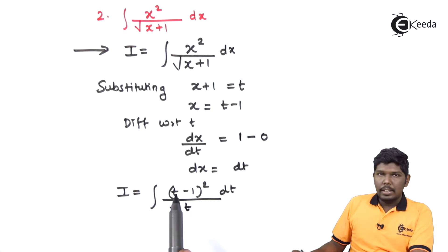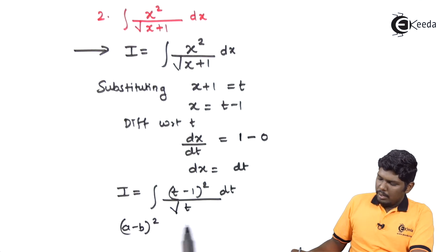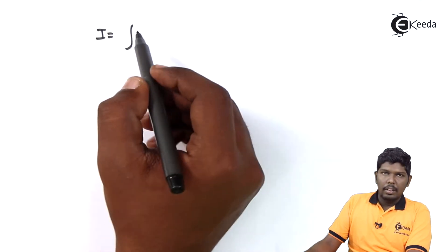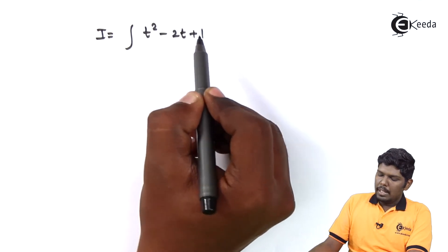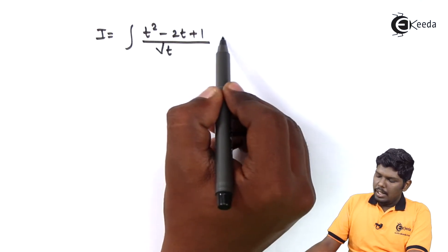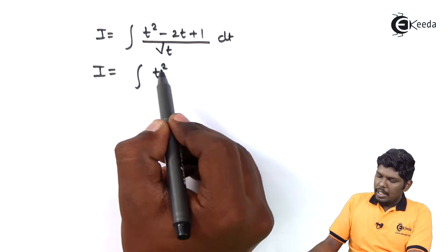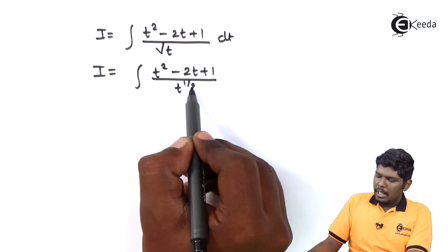In the next step we can expand the numerator using the formula a minus b whole squared equals a squared minus 2ab plus b squared. Similarly, t minus 1 whole squared gives t squared minus 2t plus 1, upon t raised to the power half, dt.